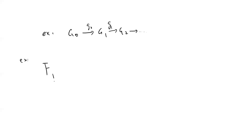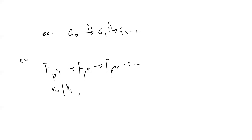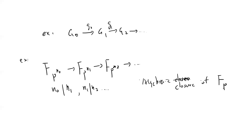One example is that if you start from a chain of finite fields where n_0 divides n_1 and n_1 divides n_2, and keep going, the direct limit will be the algebraic closure of the finite field.